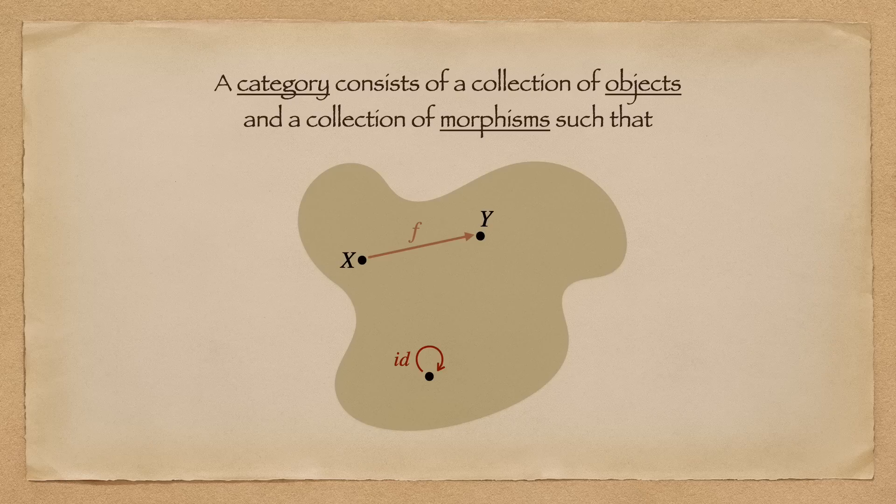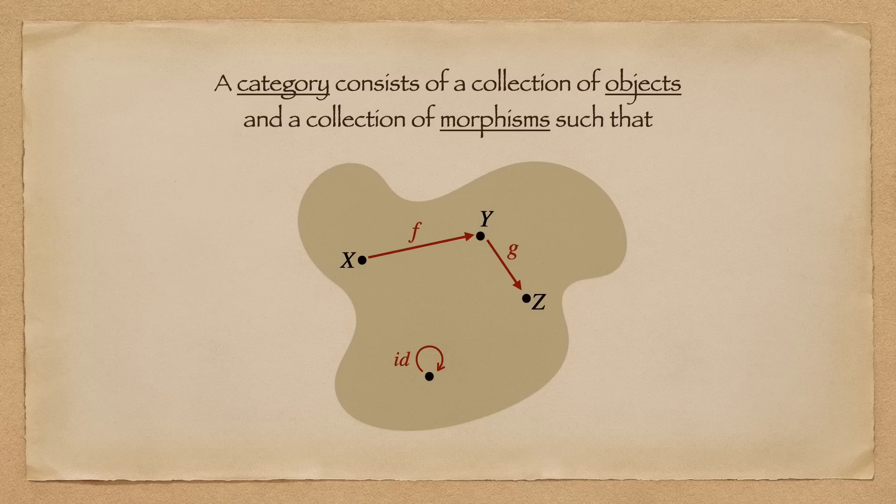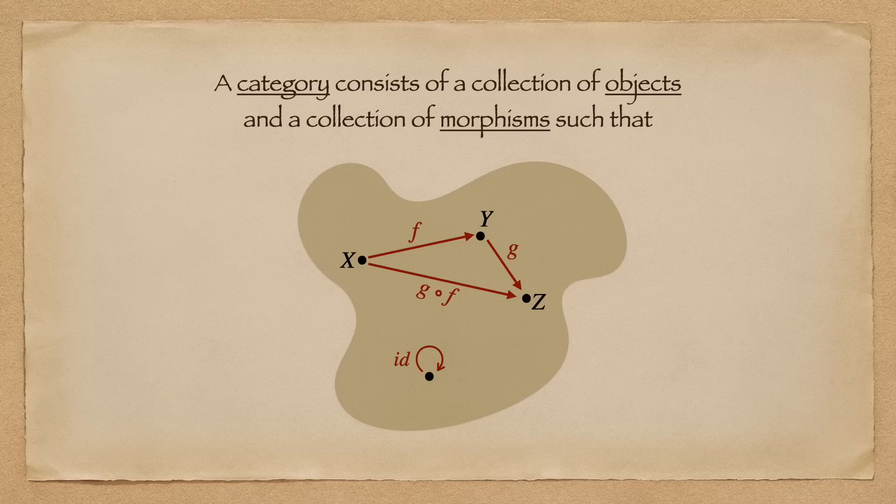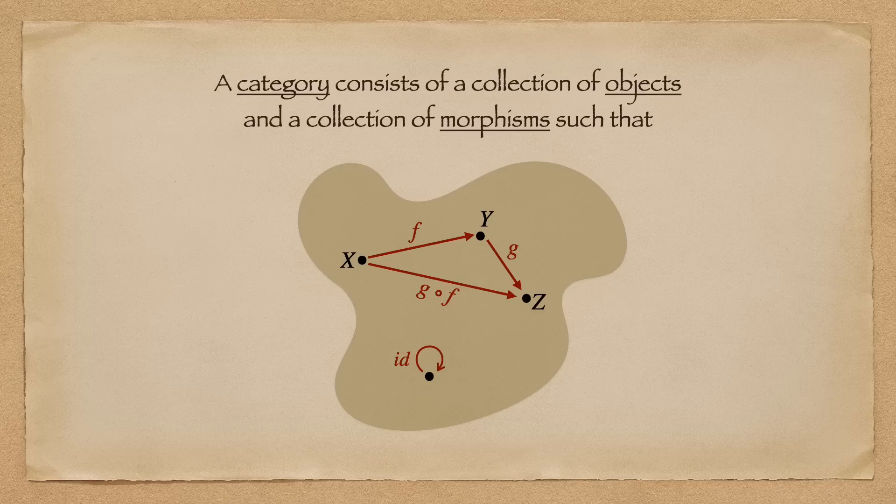That is, if you have a morphism f that maps from x to y, and a g that maps from y to z, then g composed with f should map from x to z. In addition,